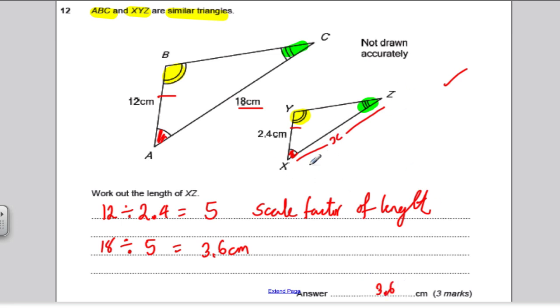Just have a sense check at the end, does it seem reasonable? Well, if that's gone down by about 5 times, that gone down by 5 times, 3.6 sounds reasonable. I want you to move on to the next question. It's a question on similar shapes, but involving mass and volume. So pause the video, have a go, and then check your answers are correct against mine, and if not, make some corrections.